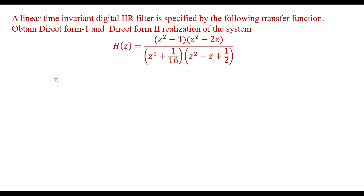In this video, we will take one numerical to realize direct form 1 and direct form 2 structure for the given transfer function. A linear time invariant digital IIR filter is specified by the following transfer function H(Z). Obtain direct form 1 and direct form 2 realization of the system.